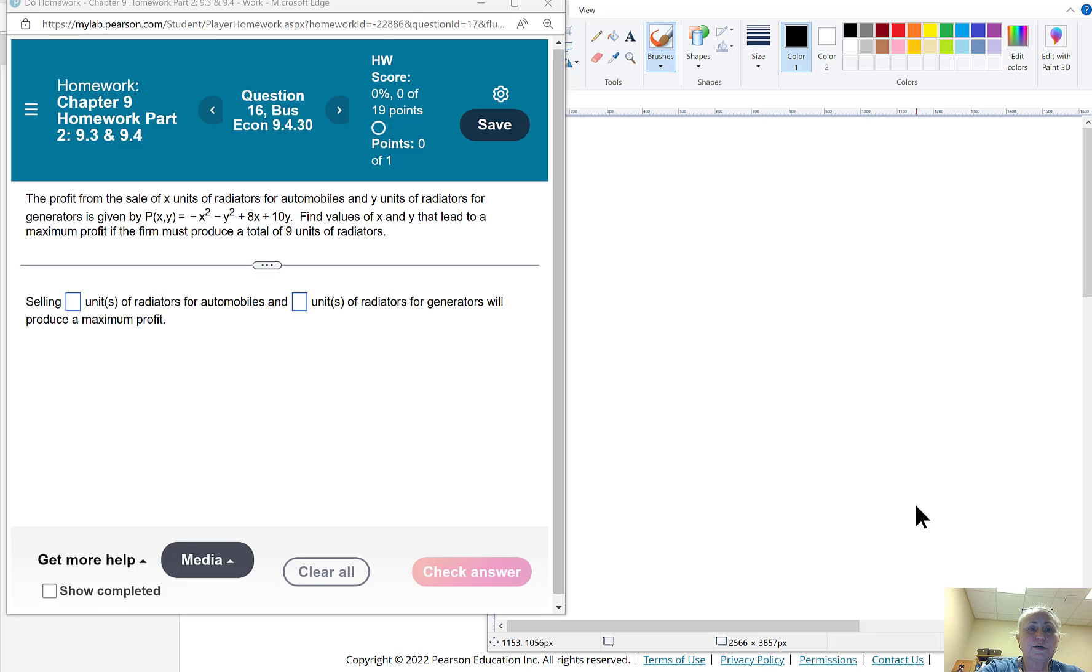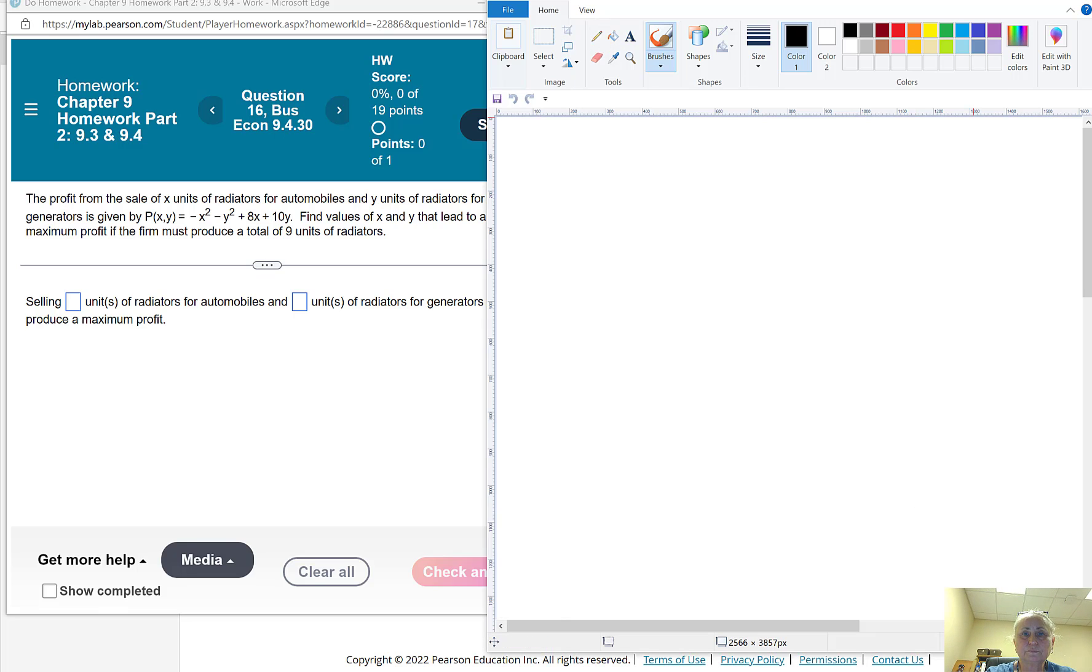So remember the formula that we're working with here. We're going to use the Lagrange formula which says capital F(x,y) is the original function minus lambda times a constraint function.